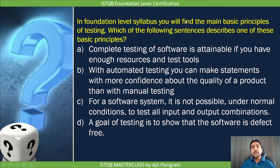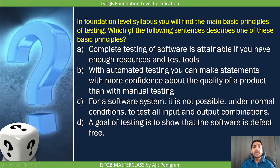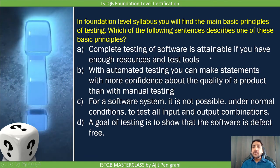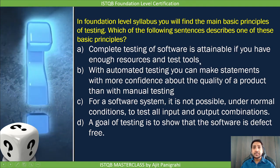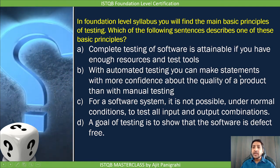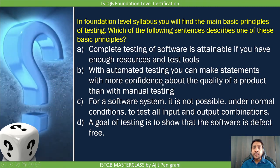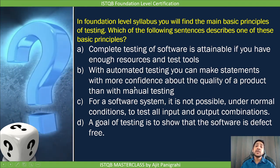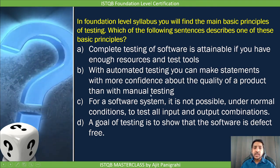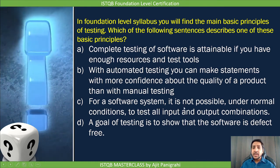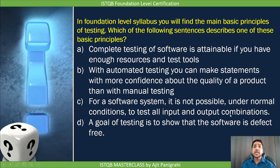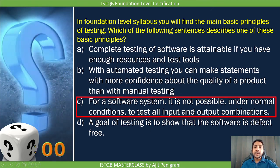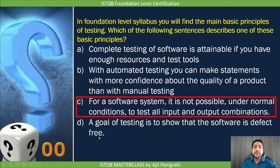Next question from the Foundation Level syllabus: Which sentence describes one of the basic principles? Option A says complete testing is attainable with enough resources and tools — false. Option B says automated testing gives more confidence than manual testing — cannot be generalized. Option C says for a software system it is not feasible under normal conditions to test all input and output combinations — this refers to exhaustive testing, so option C is the answer. Option D says our goal is to show software is defect-free — not the goal.